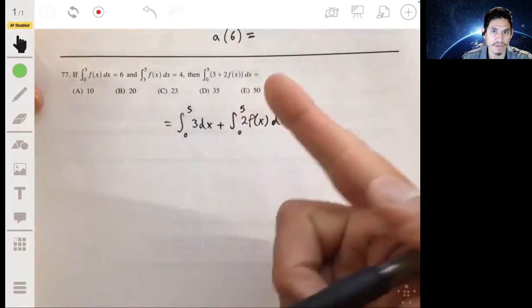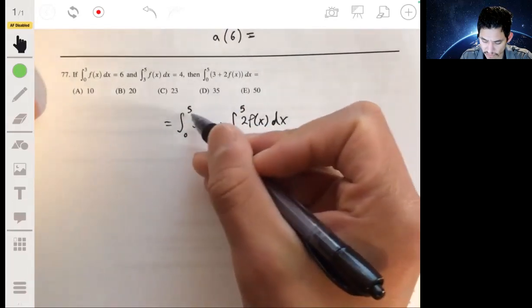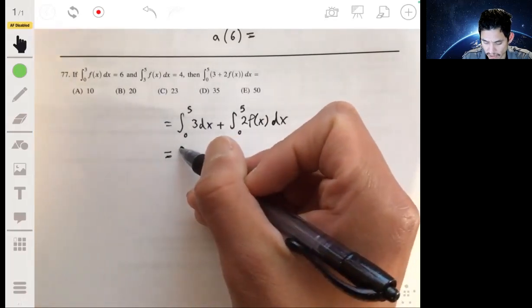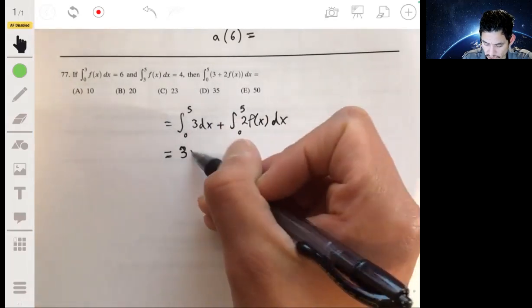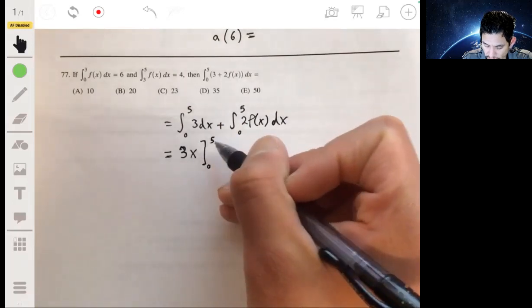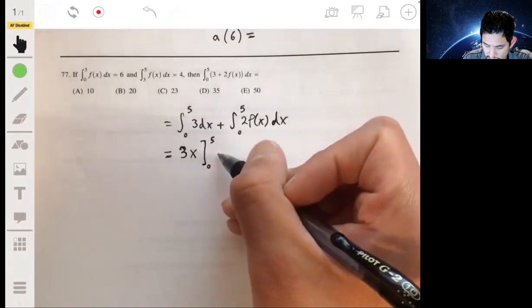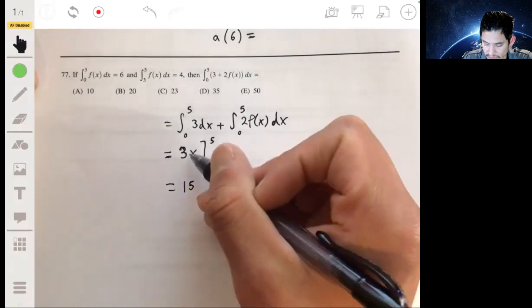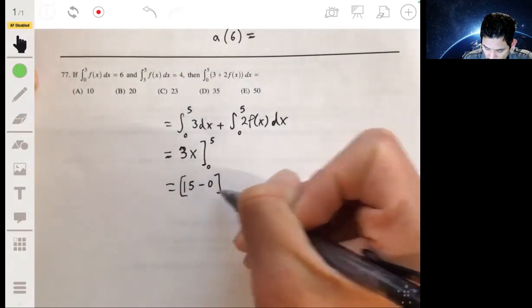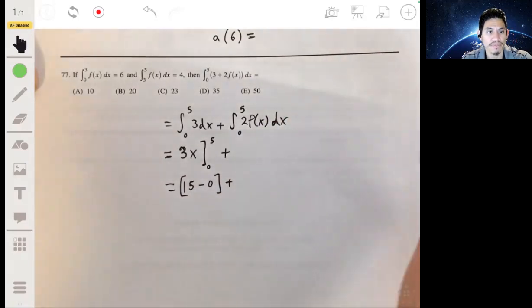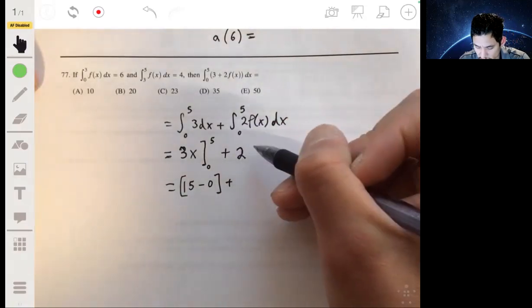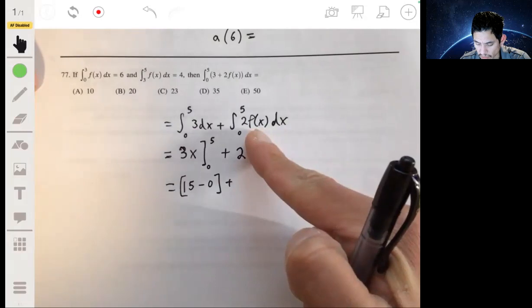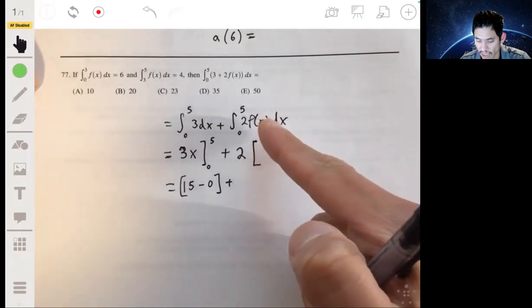This is the same thing as that—you can break it up into adding those integrals. This you just use your reverse power rule properties. That should just give you 3x if you're going to integrate from 0 to 5. The derivative of 3 is 3x, so doing this part you get 3 times 5 is 15 minus 0. Plus this integral, and here all you're doing is you can factor out that 2. All you're doing is multiplying the integral from 0 to 5 of f of x by 2.